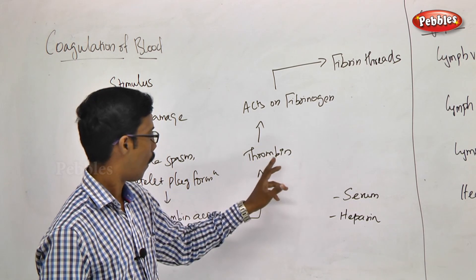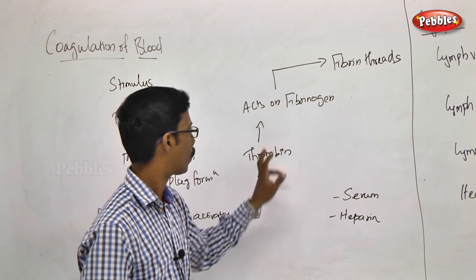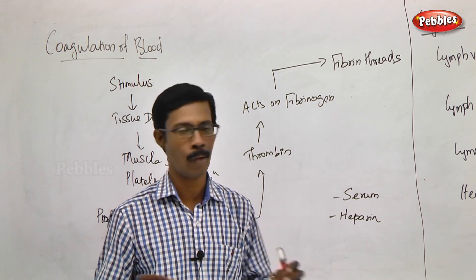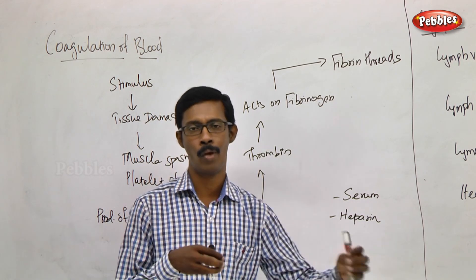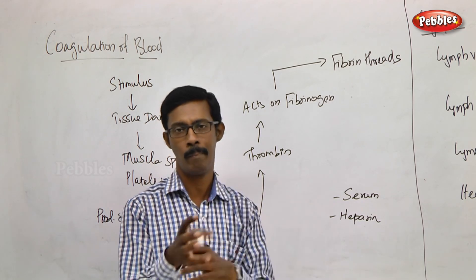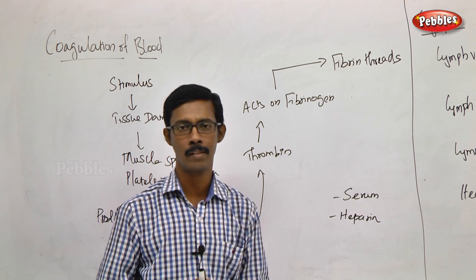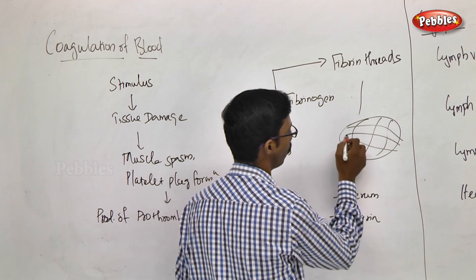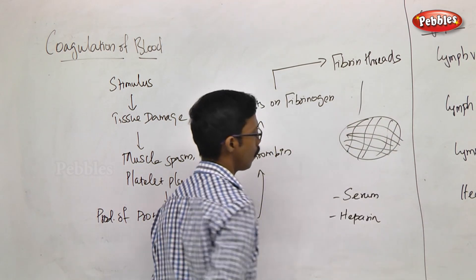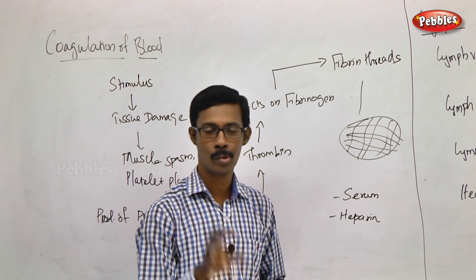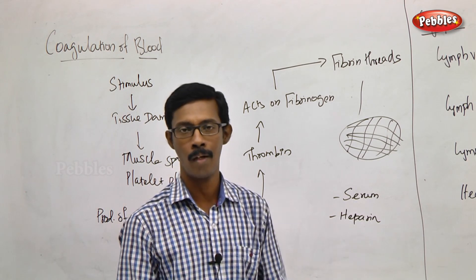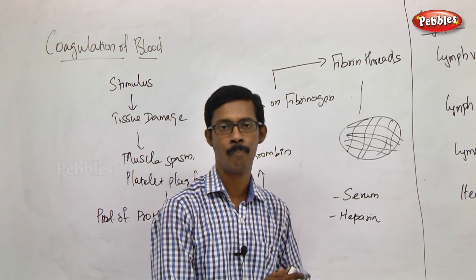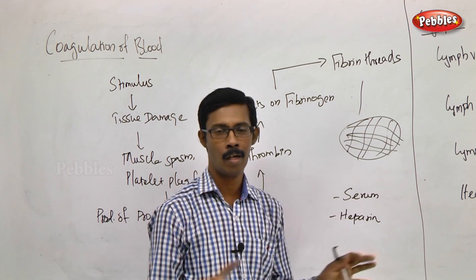Fibrinogen is the inactive form. Thrombin acts on fibrinogen, which is the active form called fibrin. Fibrins are fibers — microfibrils — forming a fibrin network. The fibrin threads are formed, and together with platelets and cell deposits, they temporarily close the wound.